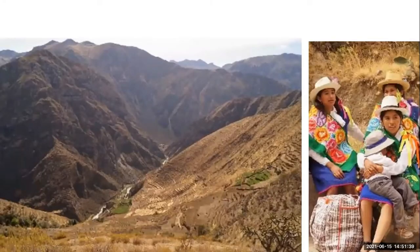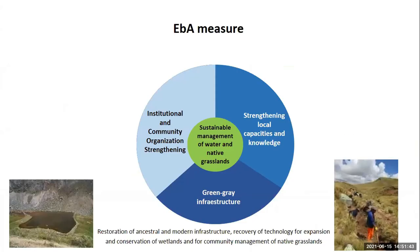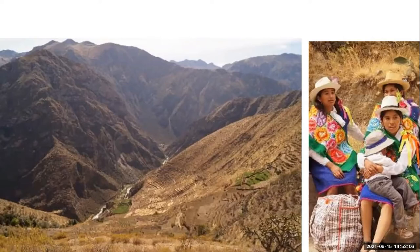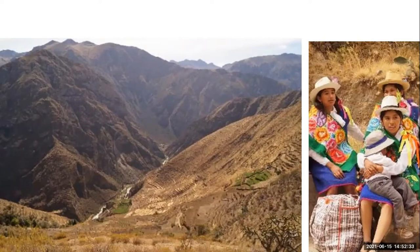Impacts of climate change such as glacier retreat and water scarcity are already affecting the area. The grassland and wetland ecosystems, on which most community livelihoods depend, are threatened not only by climate change but also by migration of young people and changing agricultural market prices. Local small farmers have been shifting to livestock raising, which needs less labor but has led to unintended effects such as grassland and wetland degradation, inadequate livestock rotation, and weak social organization for water and grassland management.